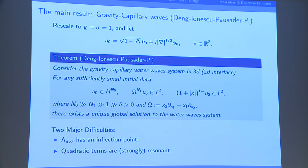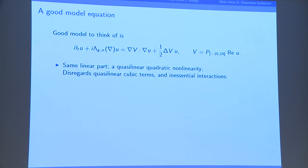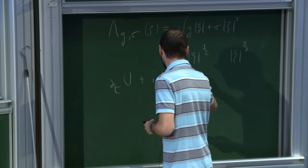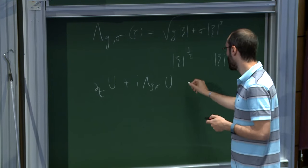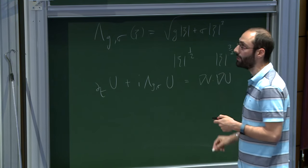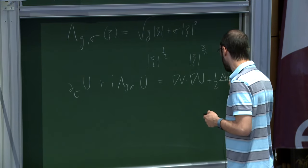Now I'll try to explain why this problem is different from the others and what are the main difficulties. There are two major difficulties. One is that the dispersion relation lambda has an inflection point when you have both g and sigma, which gives less decay even for the linear solutions. The other difficulty is that if you look at the quadratic non-linearities and the way they interact, they interact much more strongly than in the other cases.